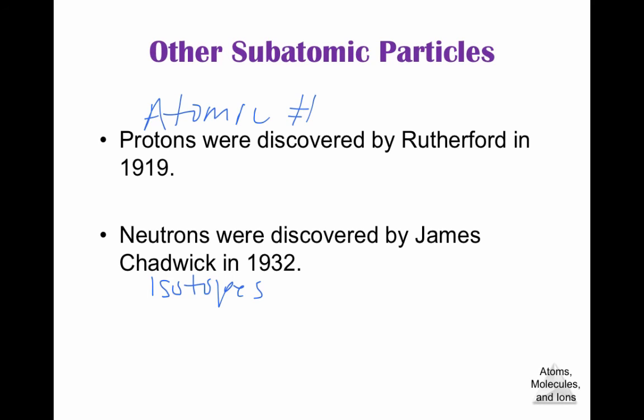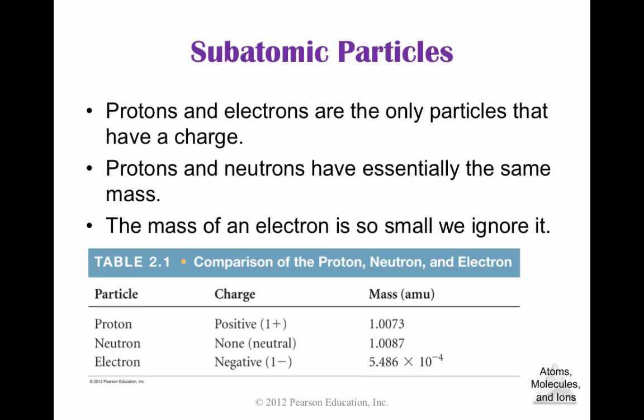Neutrons are what alter the mass number. So we have the proton, the neutron, and the electron. These subatomic particles are what proves Dalton's first postulate void — his first postulate said that atoms are indestructible and indivisible, but that's not true because we can have subatomic particles. Protons and electrons are the only particles that have a charge. Protons and neutrons have essentially the same mass, but the mass of an electron is so small we can essentially ignore it. The proton is responsible for atomic number; neutrons alter the mass number; electrons are responsible for bonding.